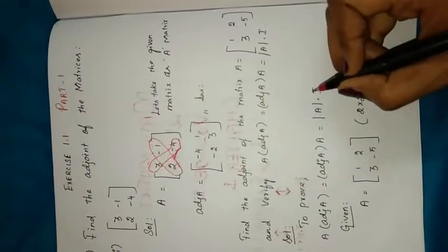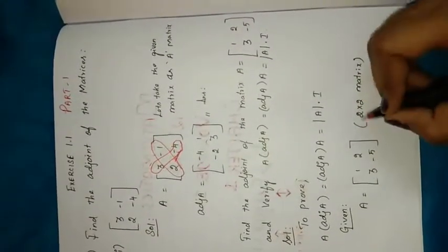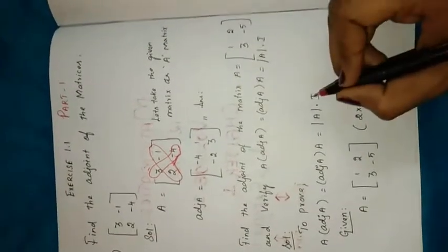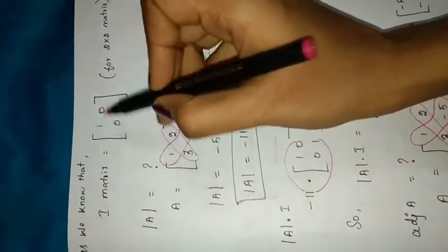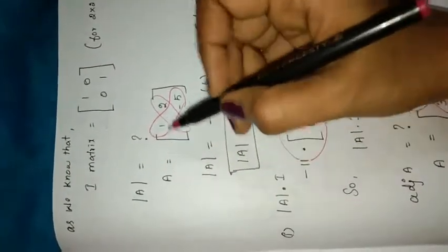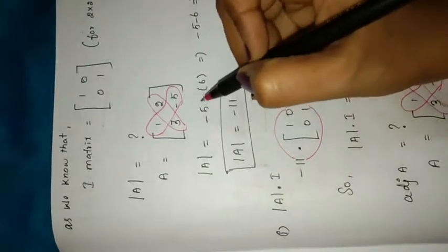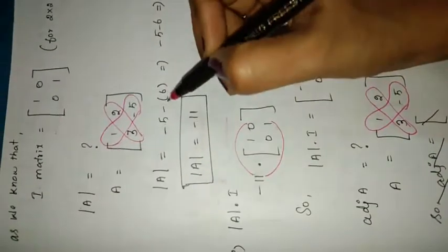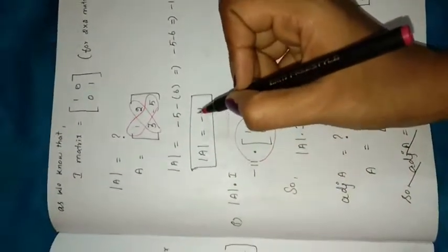First we will find |A| × I. The given matrix is a 2x2 matrix, and I is the identity matrix. For a 2x2 matrix, the identity matrix I is [[1, 0], [0, 1]]. To find |A|, we cross multiply: 1 × (-5) gives minus 5, minus 3 × 2 gives minus 6. Both have the same sign, so we add them: |A| = minus 11.